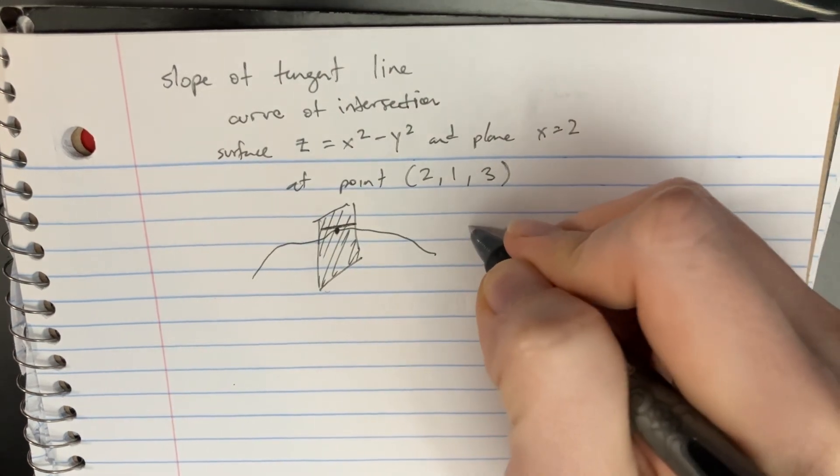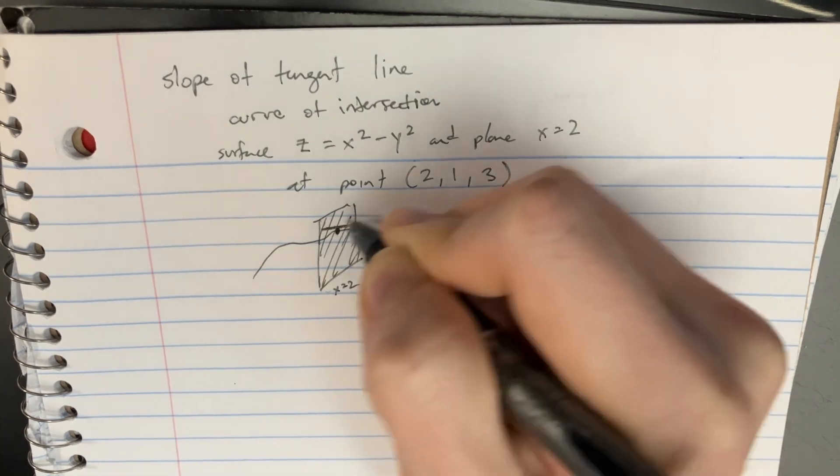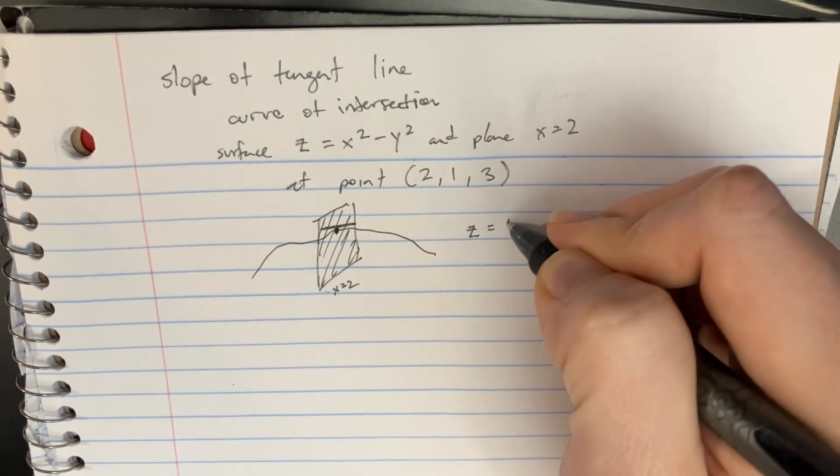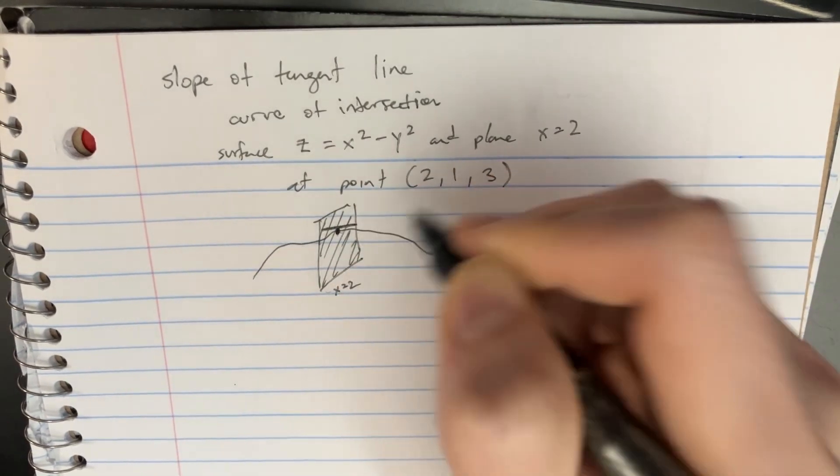And what that point is, is going to be basically z equals, if x equals 2, then we'll just plug in the 2, so we get 2 squared is 4, and then minus y squared. So it's going to be kind of like that thing.